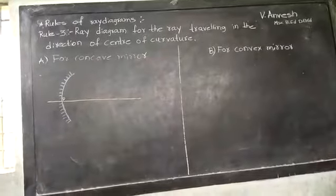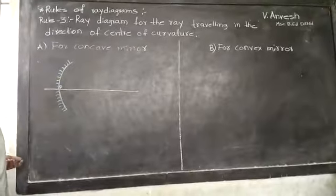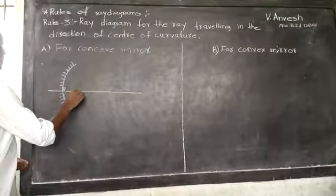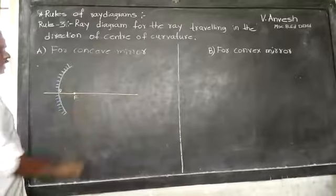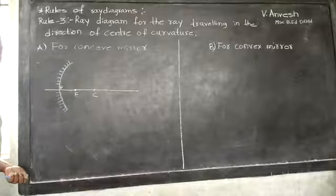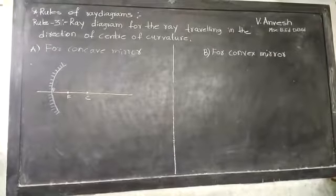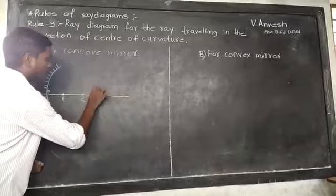This is center of the mirror is pole. Focus. Center of curvature. And this one is the object. Object is candle.